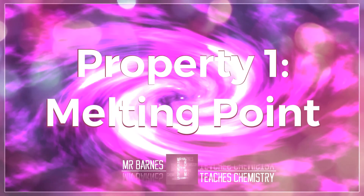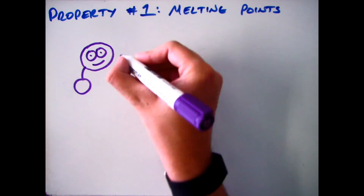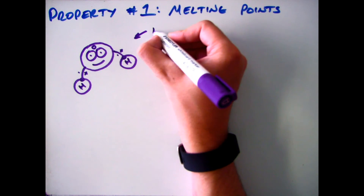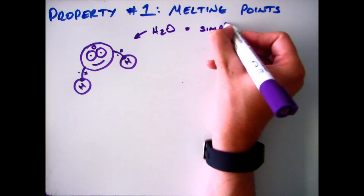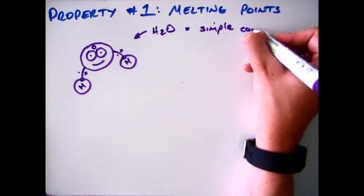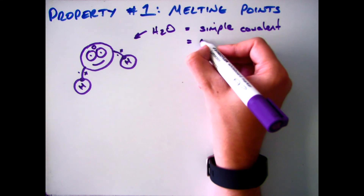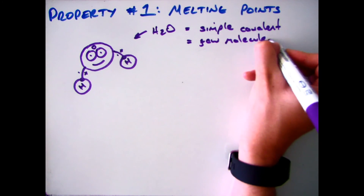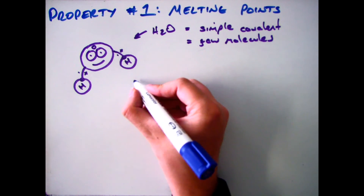Hi and welcome to this video on the properties of simple covalent compounds. The first part we're going to look at is the melting points and boiling points of simple covalent compounds. So if we use water as an example, H2O, which is a simple covalent compound because it's only got a couple of atoms involved and they're all non-metals.